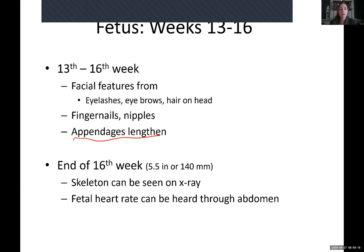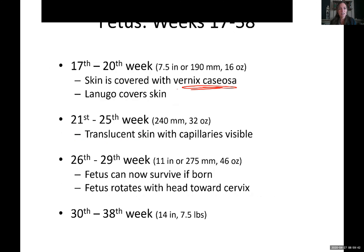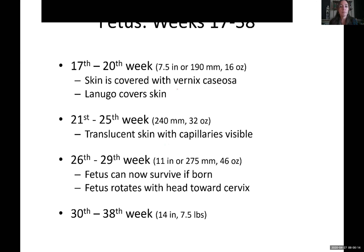By around 26-27 weeks the fetus can survive if born, with modern technology pushing that date earlier. A waxy covering protects the skin in the liquid amniotic environment. The skin is still translucent with no pigmentation yet — regardless of ethnicity, all fetuses at this stage lack pigment; melanin production begins later. The fetus is rotating head-down toward the cervix in anticipation of birth.